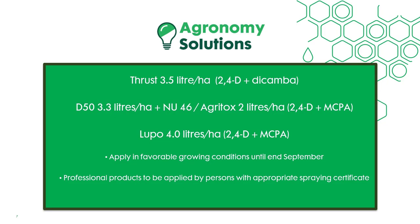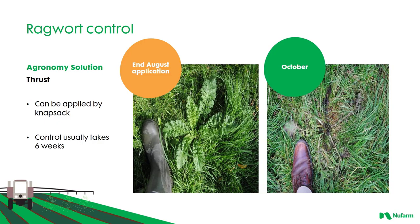Some of the agronomy solutions we offer at Nuform: Thrust at 3.5 liters per hectare, which contains 2,4-D and dicamba; D50 at 3.3 liters per hectare; Nu-46 or Agritox at 2 liters per hectare, containing the active ingredients 2,4-D plus MCPA; and Lupo at 4 liters per hectare, which contains 2,4-D and MCPA. Apply in favorable growing conditions until end of September. These are professional products to be applied by persons with the appropriate spraying certificate.